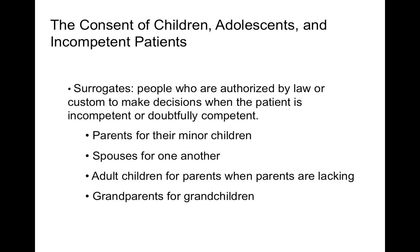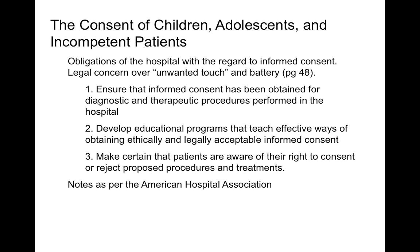There are some legally recognized relationships of legal surrogates in medical decision-making, which include parents for minor children, spouses for one another, adult children for parents when parents are lacking or incapacitated, and even grandparents for grandchildren. It is important to look state by state because sometimes the first in line in terms of a surrogate decision-maker is slightly different.